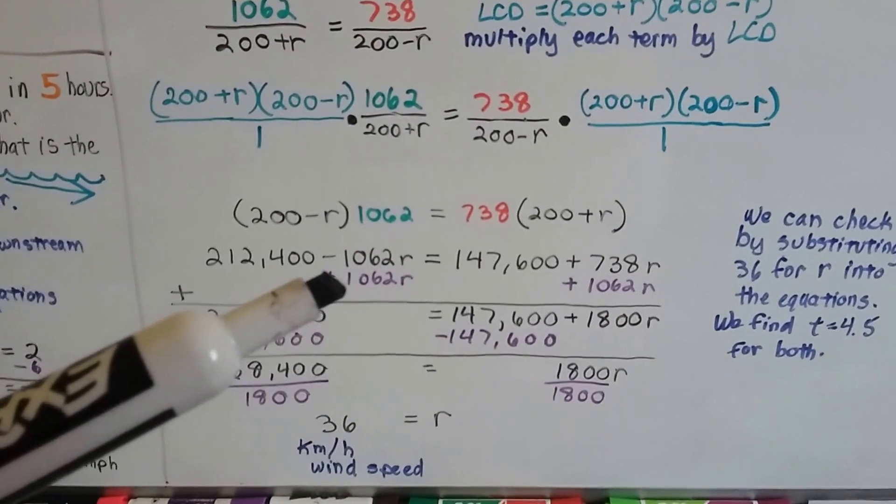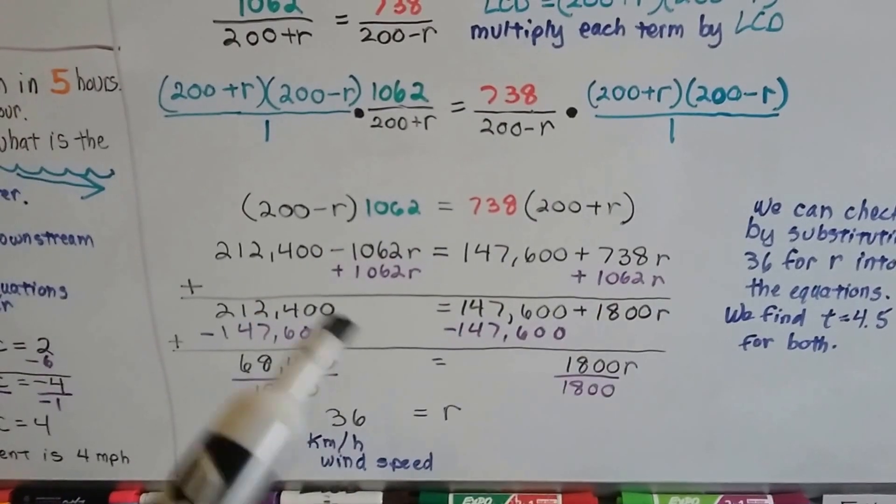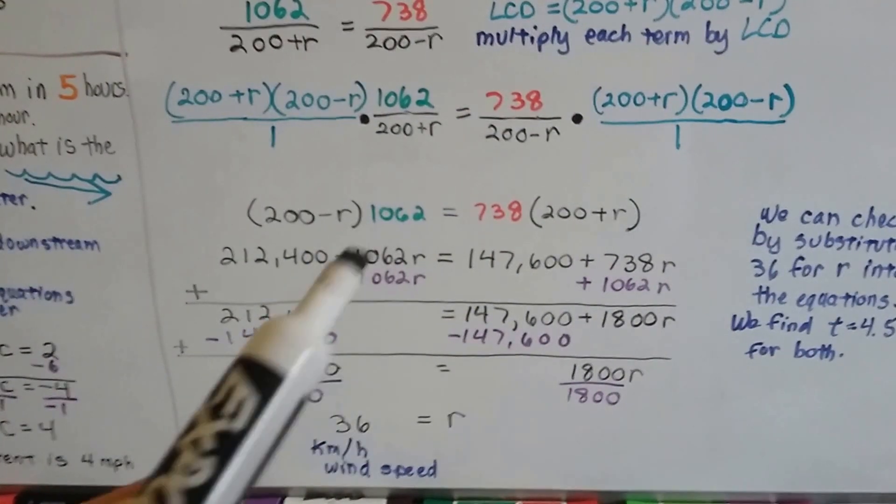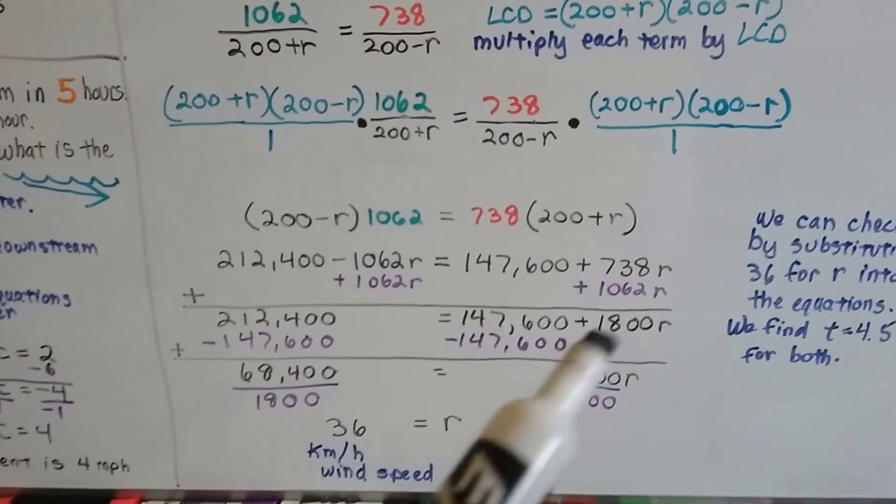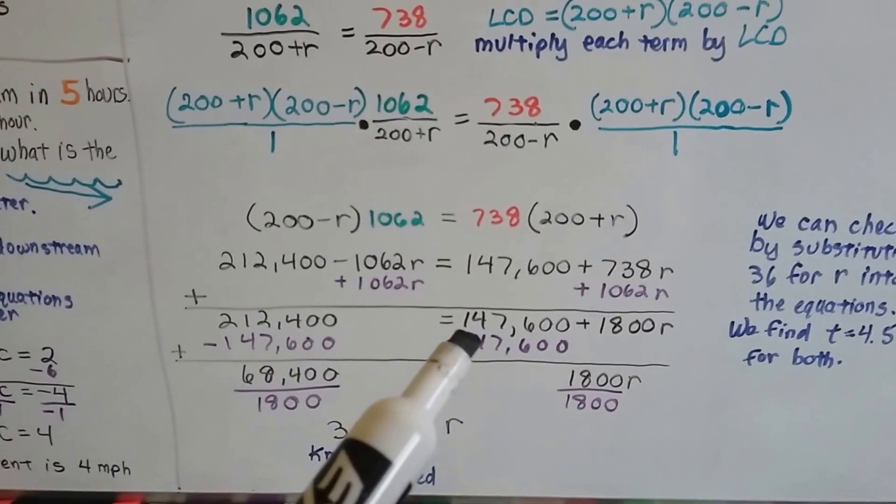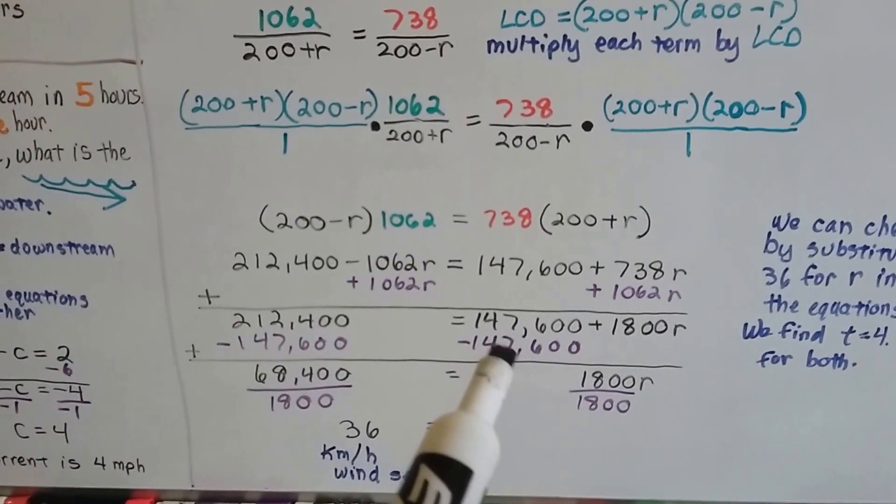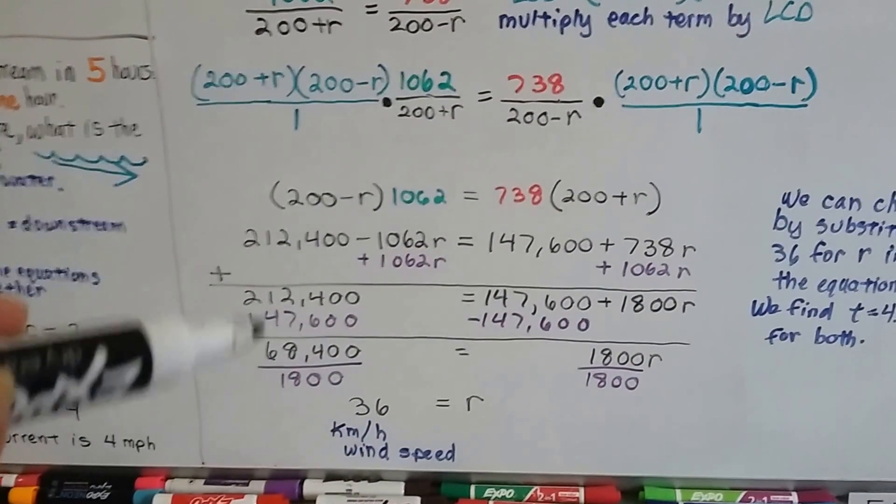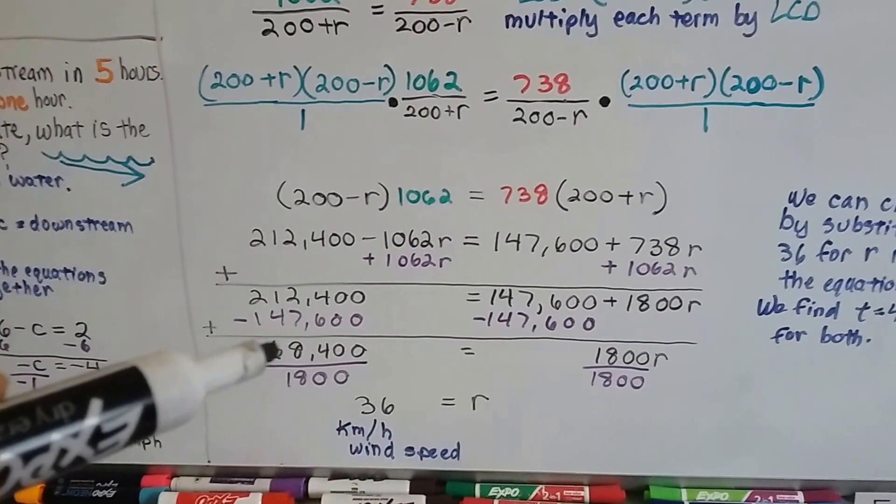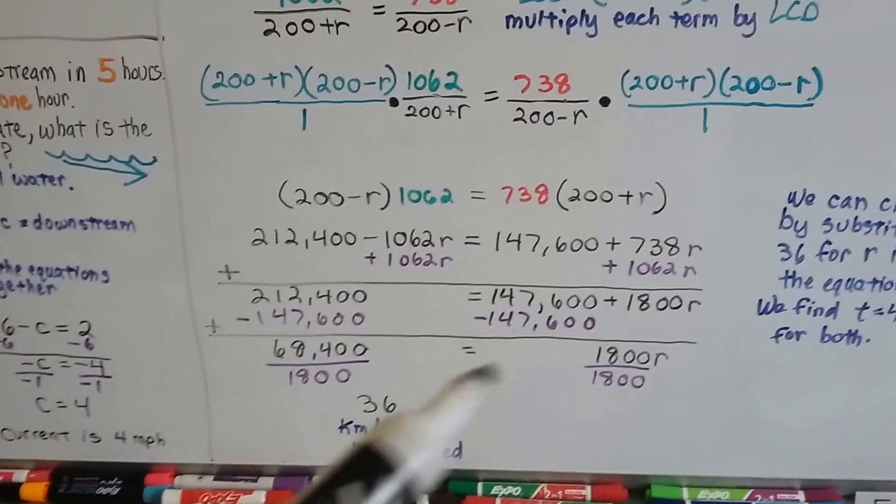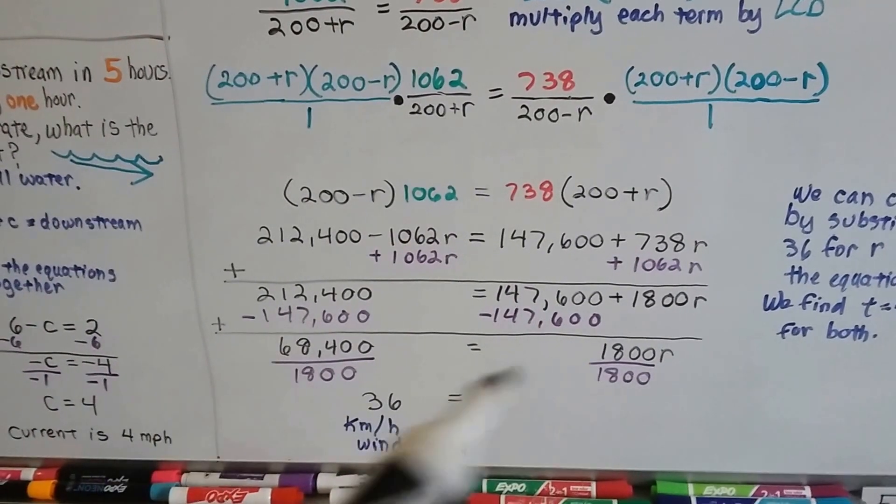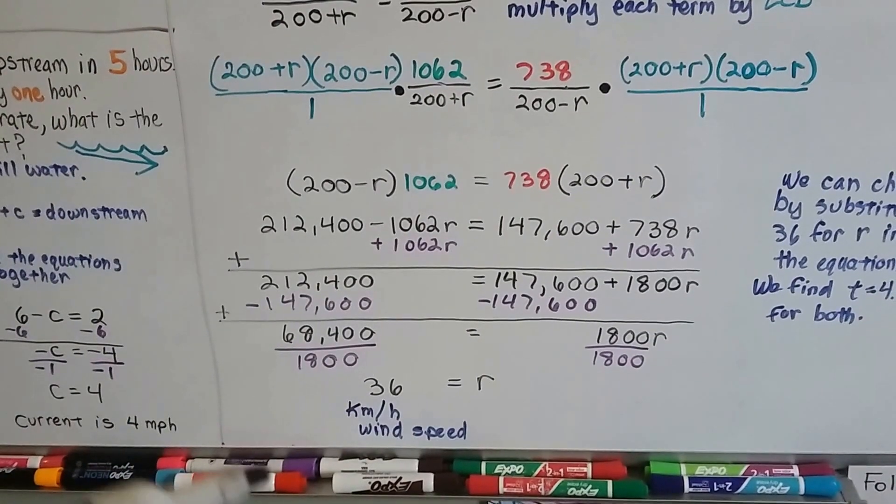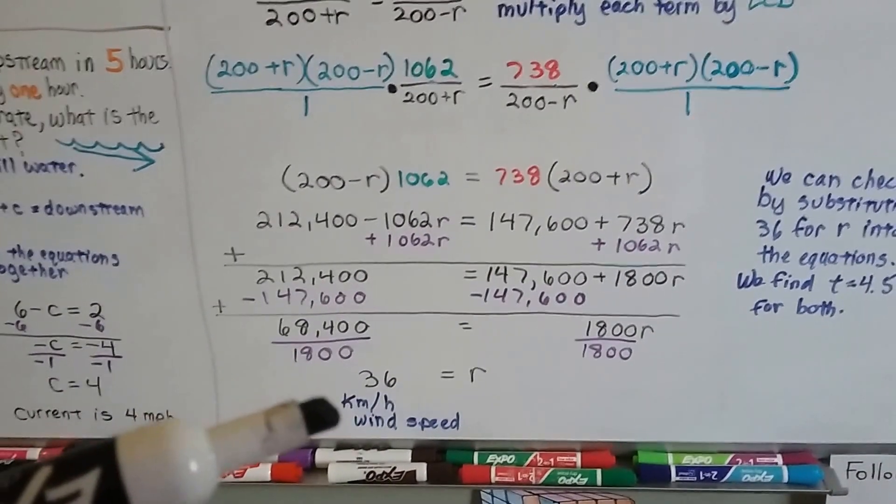Now we need to isolate the r and we need to combine like terms. So let's get the r to this side. So we're going to add 1,062 r to this side to create an additive inverse zero pair here. So all we have on this side is 212,400. We add these two together, we get 1,800. We drop down the 147,600. Now we need to get him over to this side, so we're going to add a negative 147,600 to each side. And when we subtract this from the 212,400, we get 68,400. And on this side we have 1,800 r. We need to isolate r, so we divide each side of the equation by this 1,800 coefficient. And 68,400 divided by 1,800 is 36. So we know r equals 36, and that's the kilometers per hour wind speed.